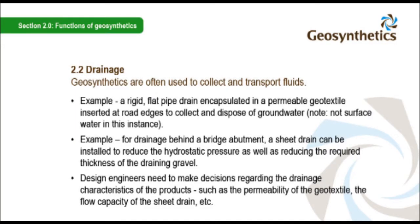Geosynthetics are often used to collect and transport fluids. Example 1: a rigid flat pipe drain encapsulated in a permeable geotextile inserted at road edges to collect and dispose of groundwater — note, not surface water in this instance. Example 2: for drainage behind a bridge abutment, a sheet drain can be installed to reduce the hydrostatic pressure as well as reducing the required thickness of the draining gravel. Design engineers need to make decisions regarding the drainage characteristics of the products, such as the permeability of the geotextile and the flow capacity of the sheet drain.